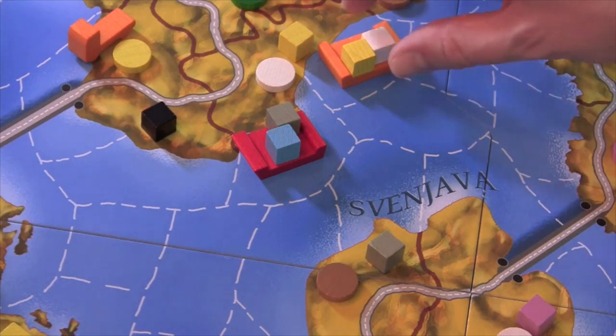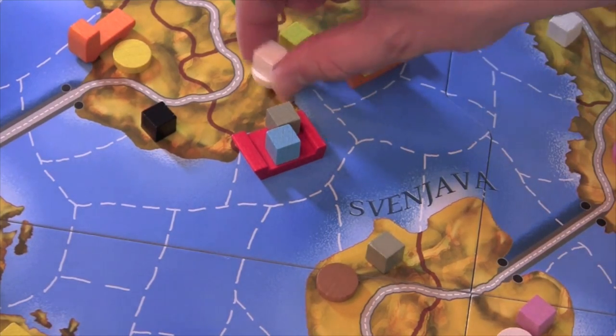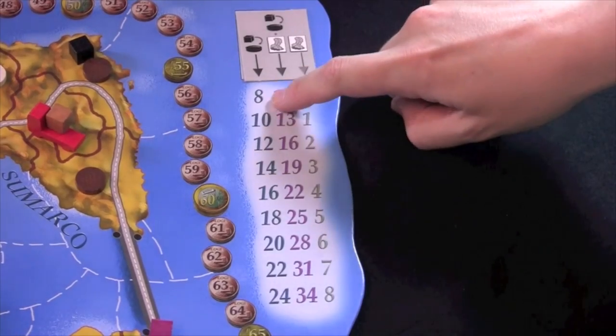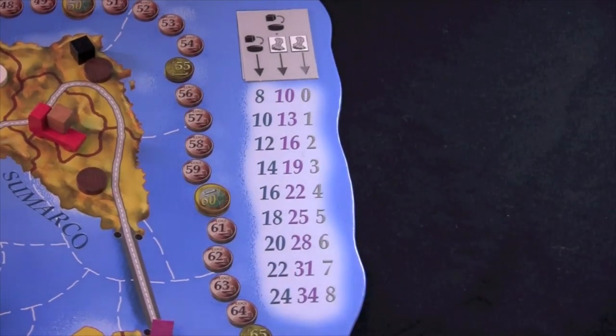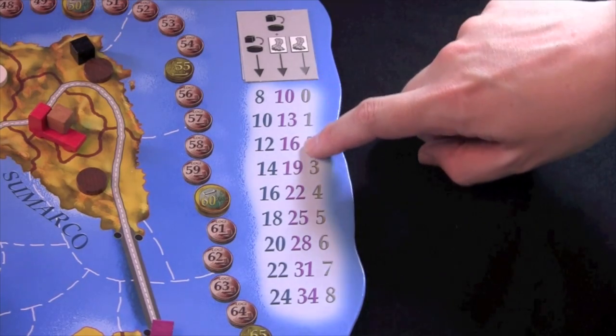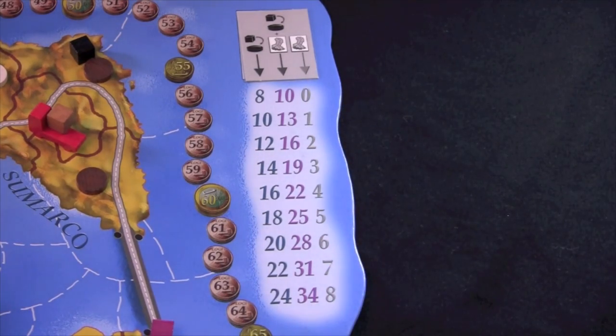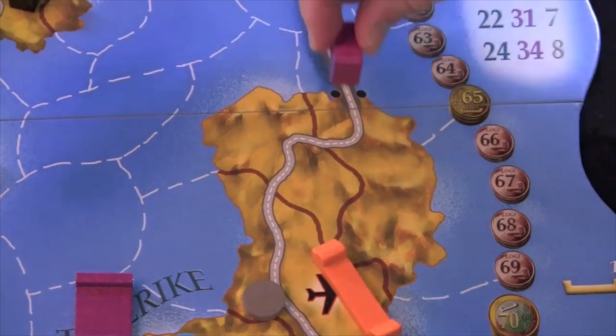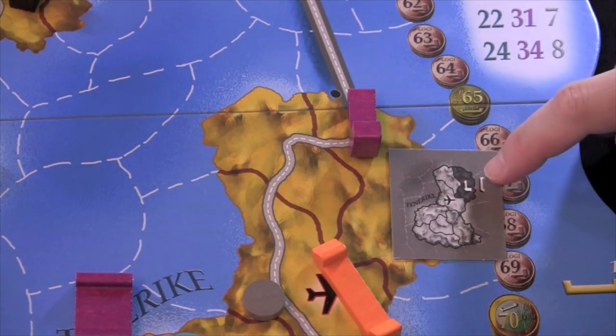When players successfully deliver to a matching disk, the cube and disk are removed, and they get paid based on this chart. The first column is for a simple delivery, the second is for a delivery to one of your bonus locations, and the third is for visiting your bonus location if somebody else delivers there first.